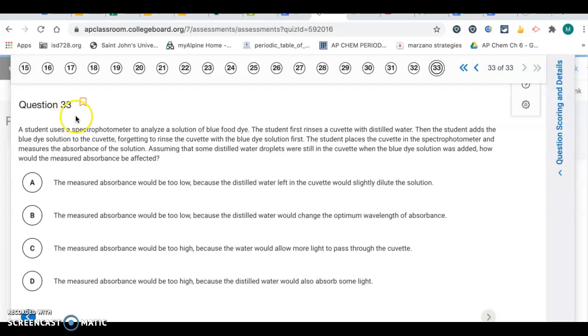Question 33. Another spectrophotometer question. You rinse the cuvette with distilled water. The student adds a blue dye solution to the cuvette and forgets to rinse the cuvette with the blue dye solution first. The student places the cuvette in the spectrophotometer and measures the absorbance. There are some distilled water droplets left over. How would that affect the absorbance? It would be too low because the concentration would be too low. Measured absorbance would be too low because the distilled water would slightly dilute it. Letter A.